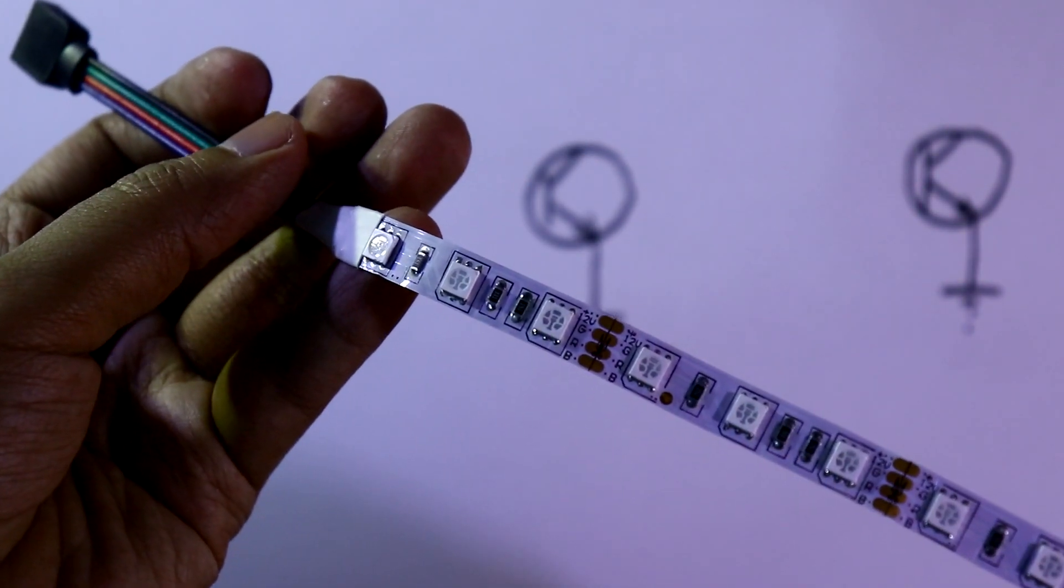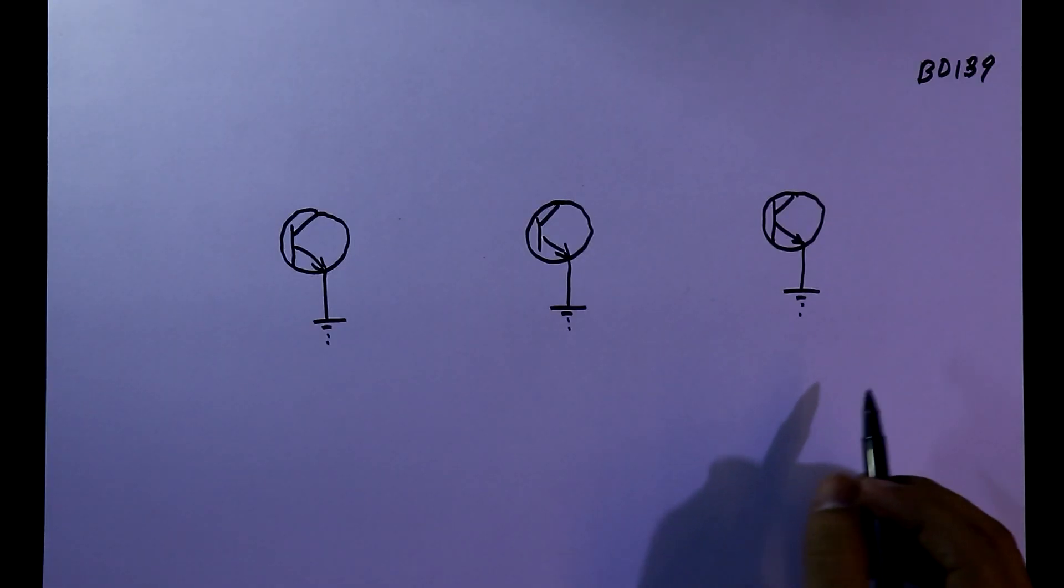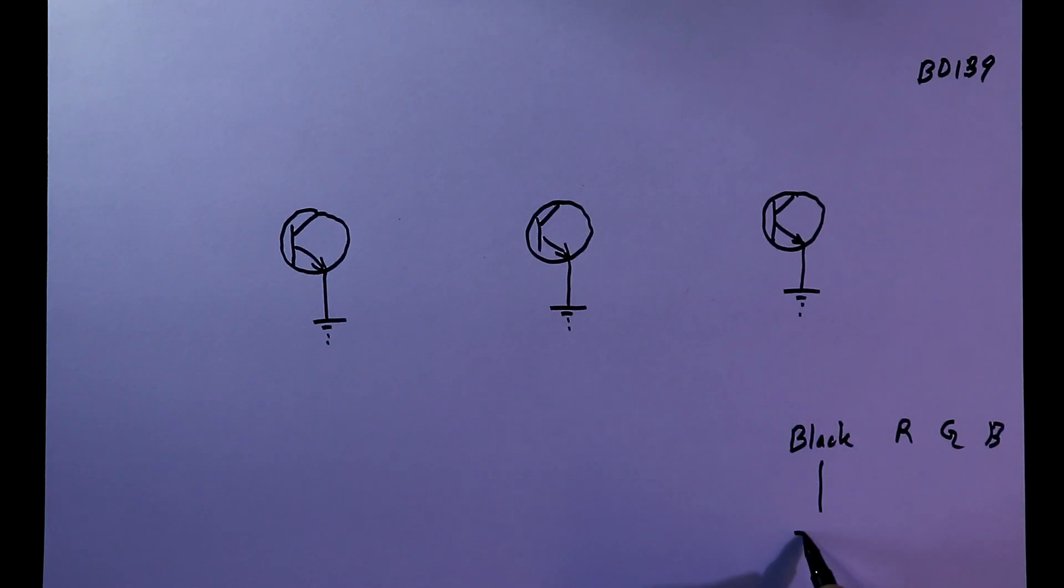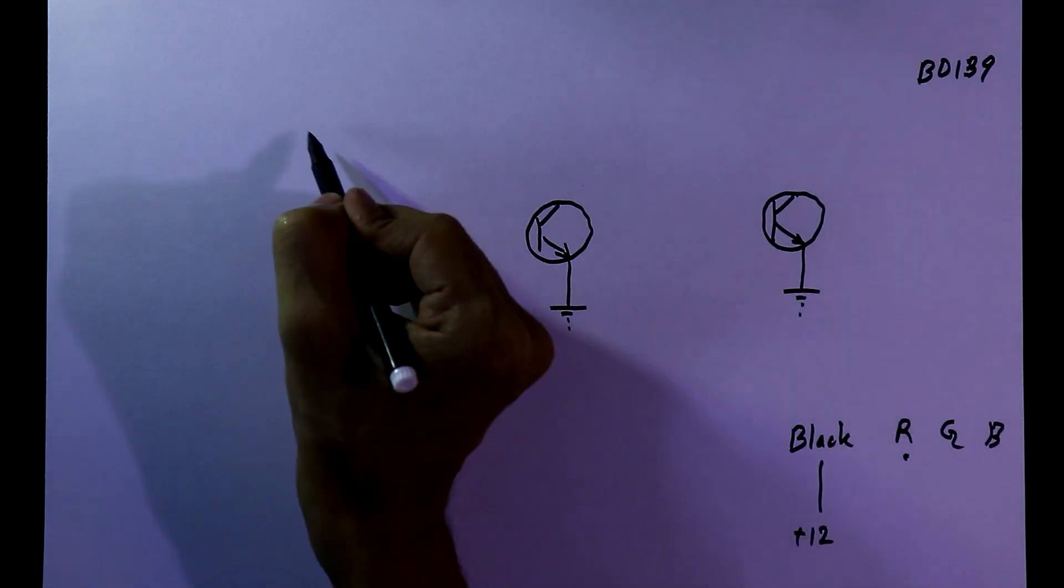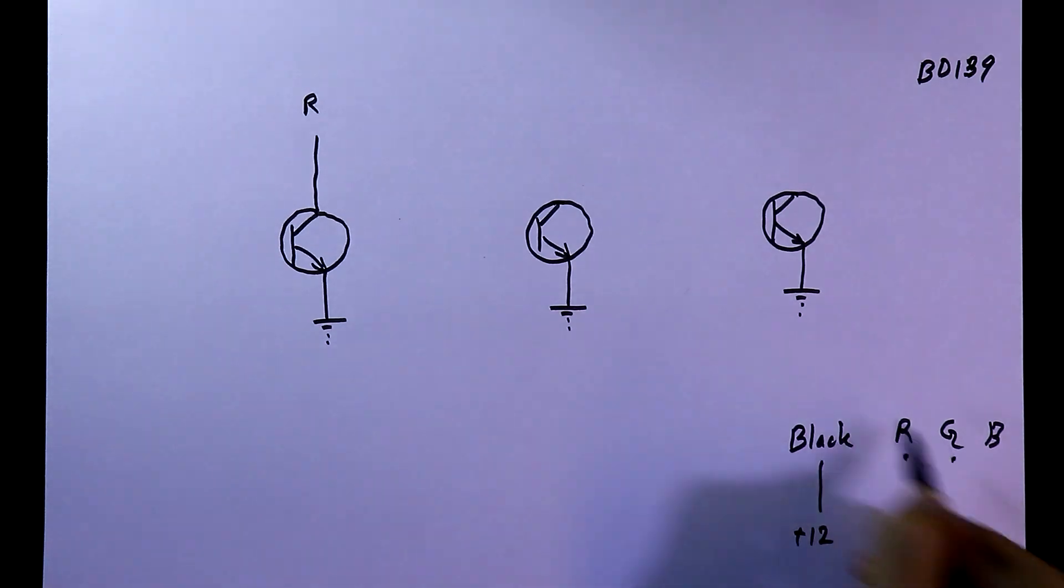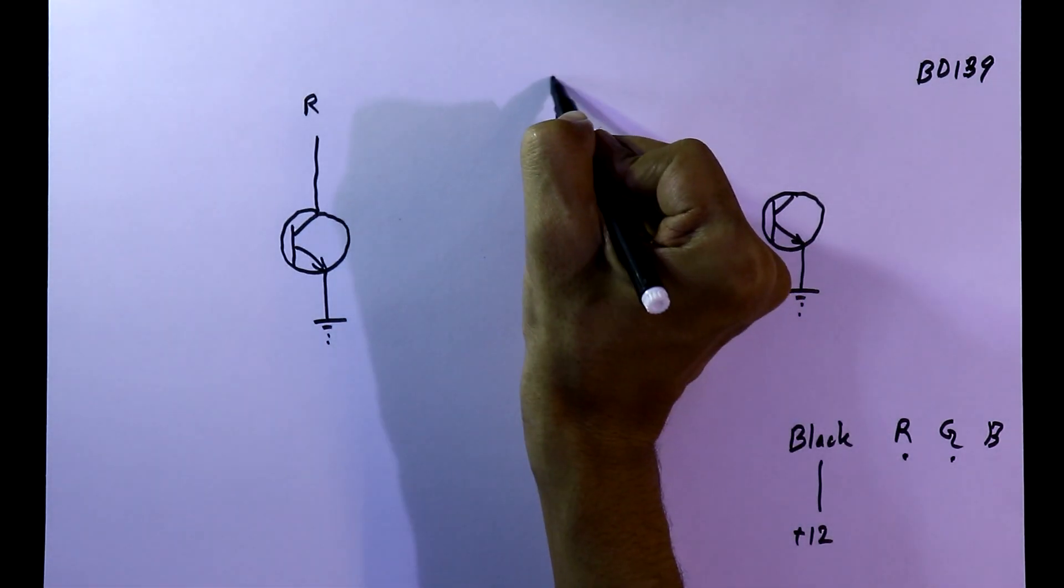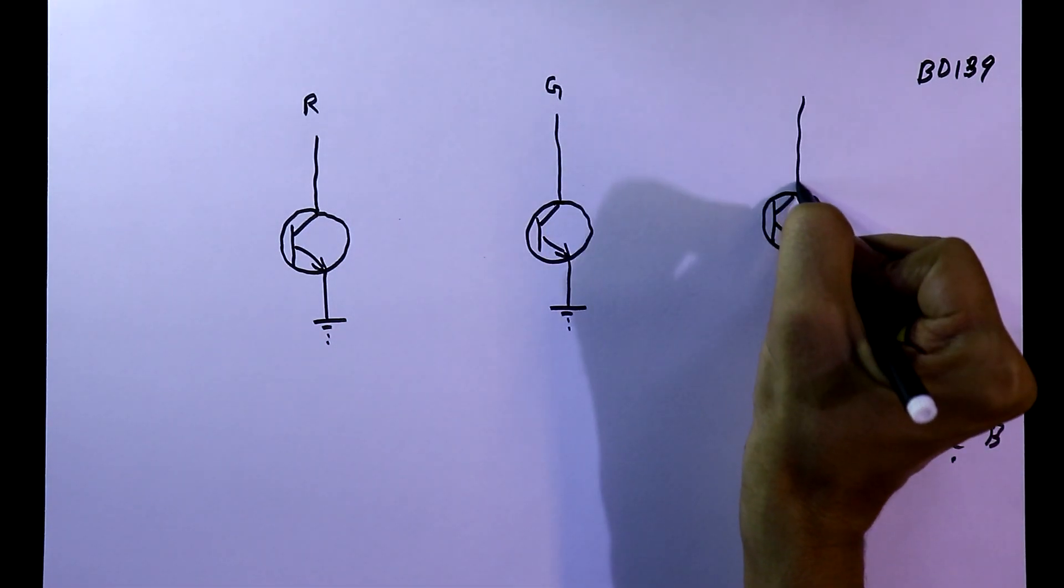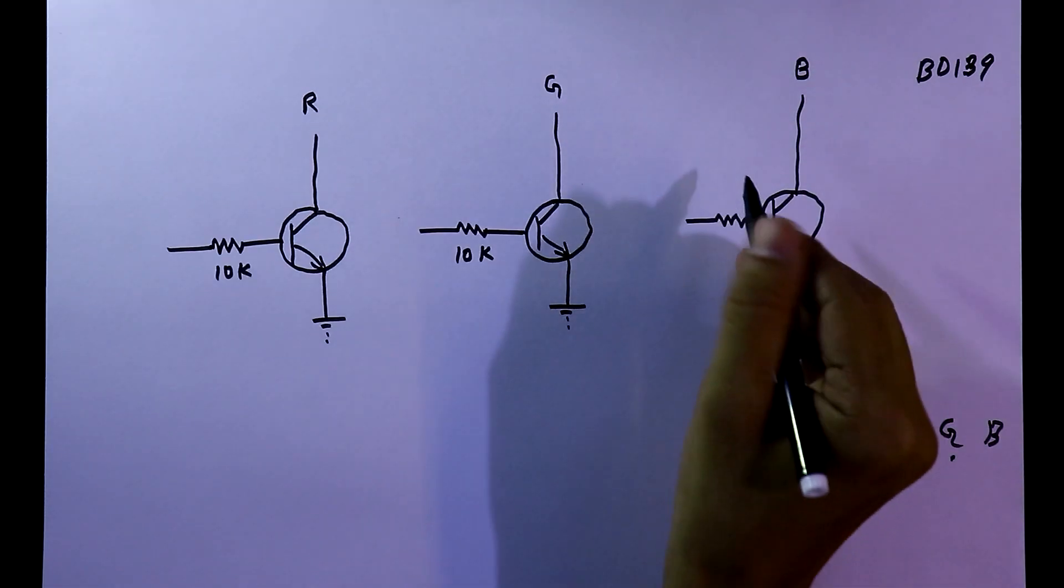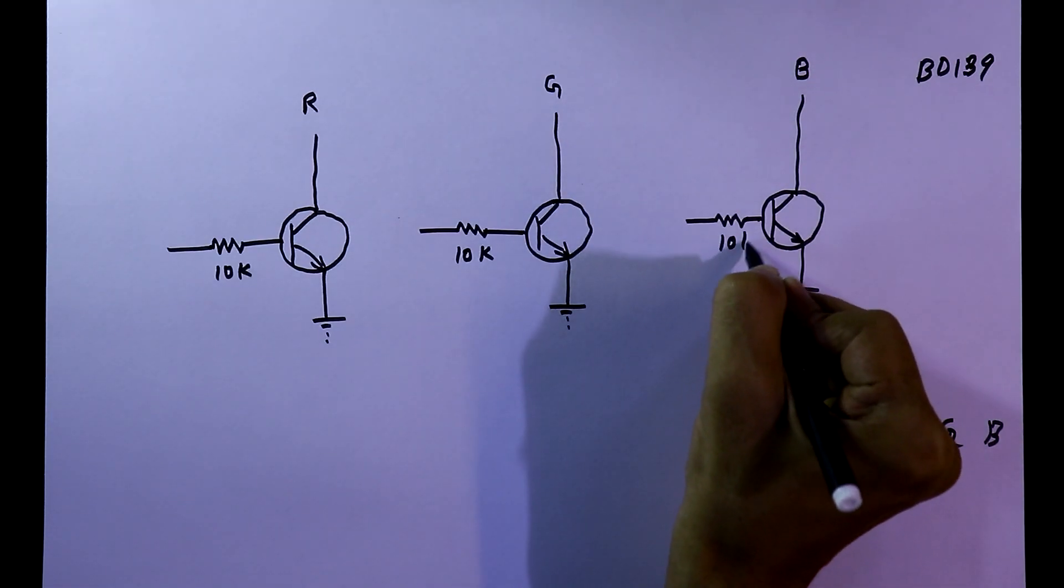As we have seen, it has four pins: black and RGB. This will be connected to 12 volt. The R pin will be connected to this collector, green here, and blue pin here. With the base of the transistor, I'll connect 10 kilo ohms resistor.